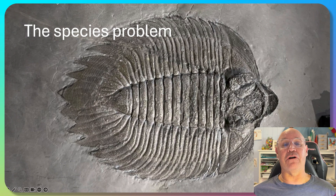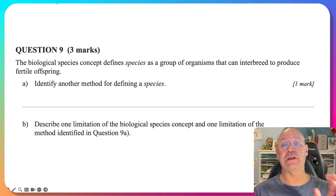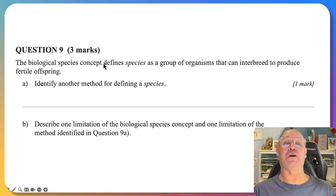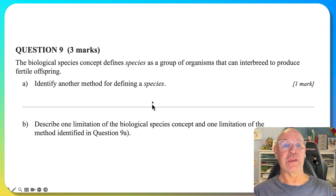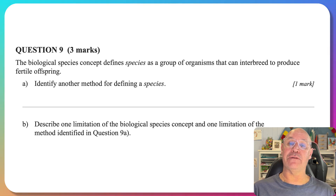Let's have a look at the problems of trying to determine if organisms are of the same species. There was an exam question in the 2022 QCAA biology external exam that started by defining the biological species concept, then asked for another way of defining species, and then asked for limitations of the biological species concept and of the other method identified.